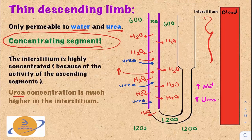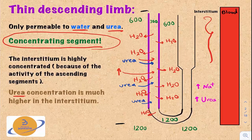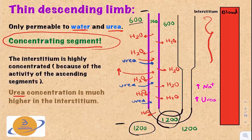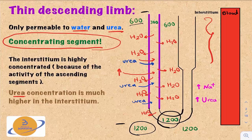As we move along the thin descending limb from top to bottom, the concentration of the medullary interstitium increases progressively — from around 300 to 600 and all the way to 1200 mOsm. Since the thin descending limb is permeable to water, the osmolarity equalizes, and the filtrate at the bottom of the loop reaches a very high concentration. The high interstitial concentration is caused by two major solutes: sodium and urea.